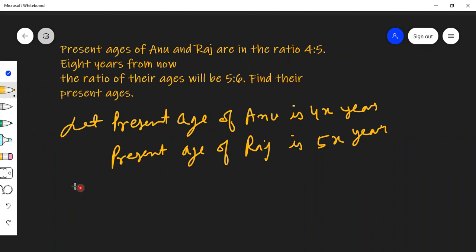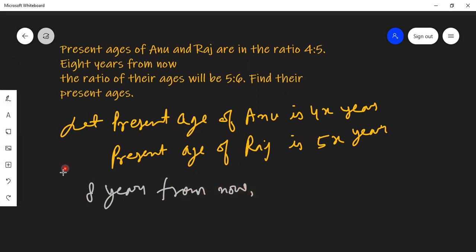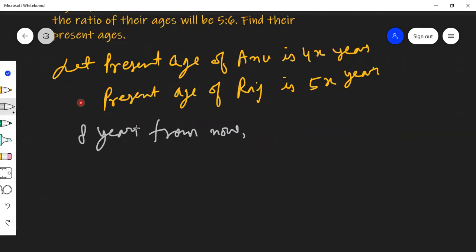Eight years from now, we know what will happen to our ages 8 years from now. Simply, whatever is the present age, 8 years will be added. So, I can say age of Anu. Now I know what that would be. Age of Anu will be, her present age is 4x, so 4x plus 8.